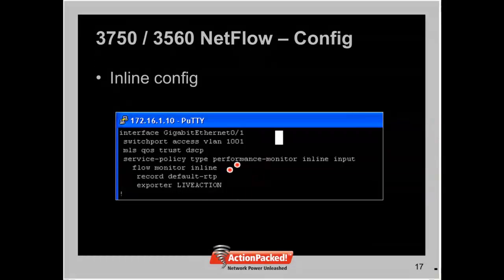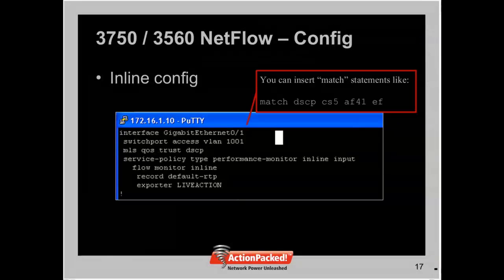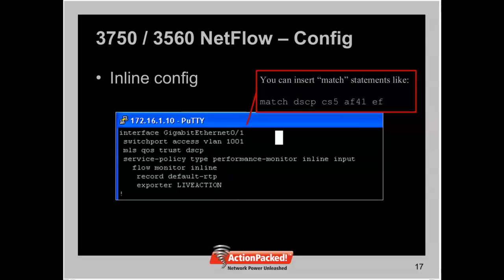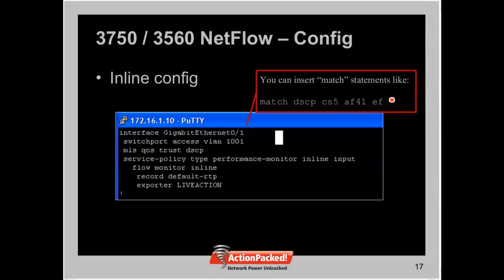In the inline config, you have the service policy of type performance monitor with the inline command, then flow monitor inline, then record default RTP, and then the exporter pointing to LiveAction's IP address. You can also put match statements inline — such as matching DSCP CS5, AF41, or EF — to narrow down collection to critical real-time traffic in your network.